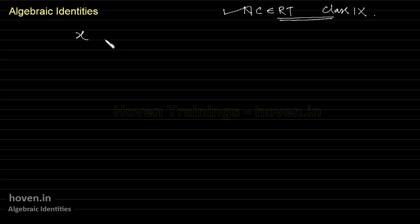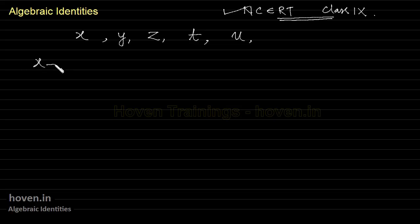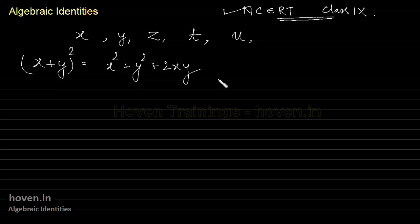This is a variable x, this is a variable y, z, t. These lowercase letters are used to denote variables in algebra. So if we have an equation of this form — x plus y whole square is equal to x square plus y square plus 2xy — then this is called an identity. Identity means something that will stay true for all values of x and all values of y.